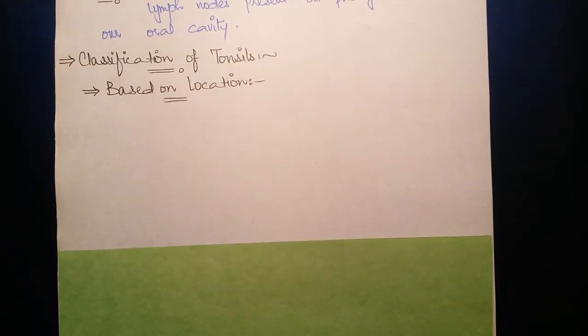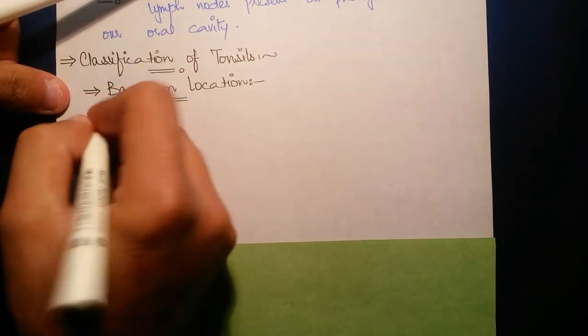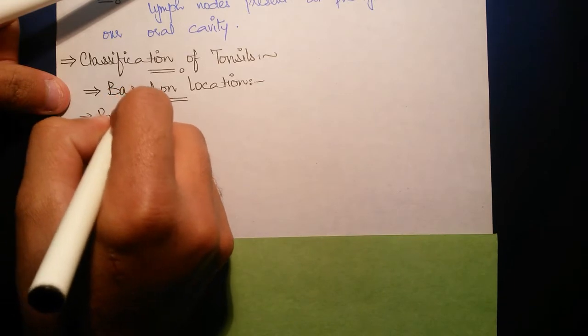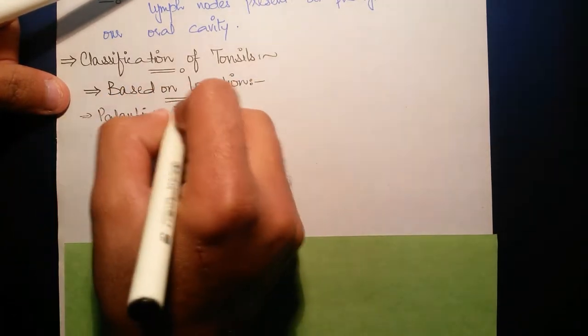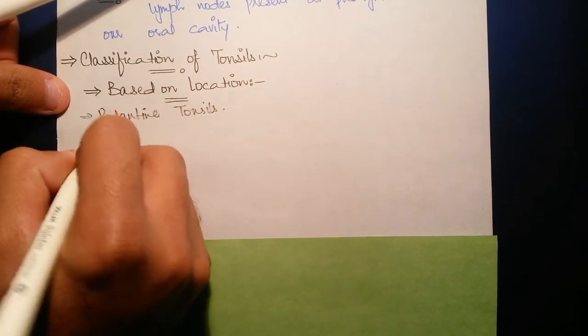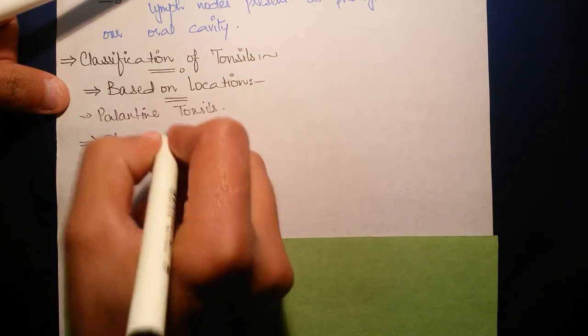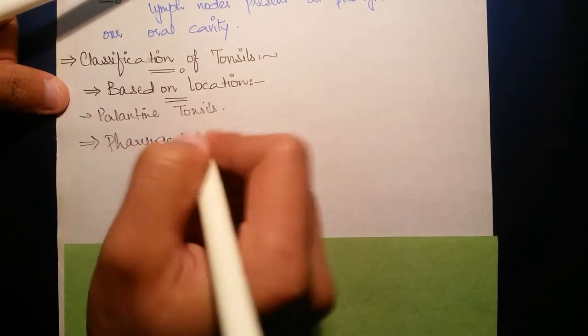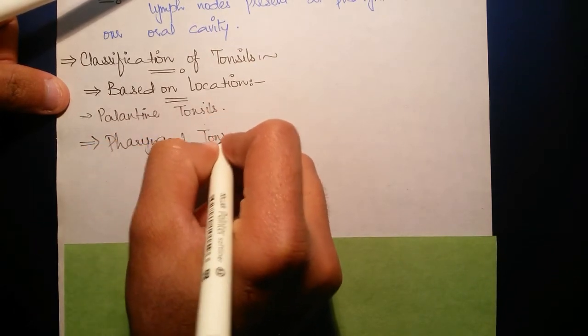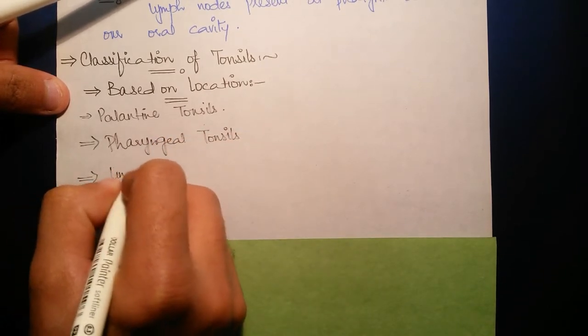According to location, there are three types of tonsils: number one is palatine tonsils, number two is pharyngeal tonsils, and number three is lingual tonsils.